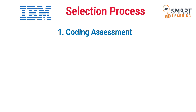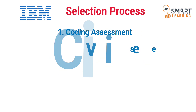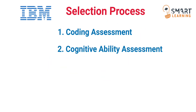Practice the coding questions on HackerRank because those coding questions can repeat in your main exam. Once you clear the coding assessment, the next round is the cognitive ability assessment. This is the second round in the selection process. You will get a mail related to the second round once you clear the first round. In this second round, totally 6 questions will be given with a time limit of 30 minutes.